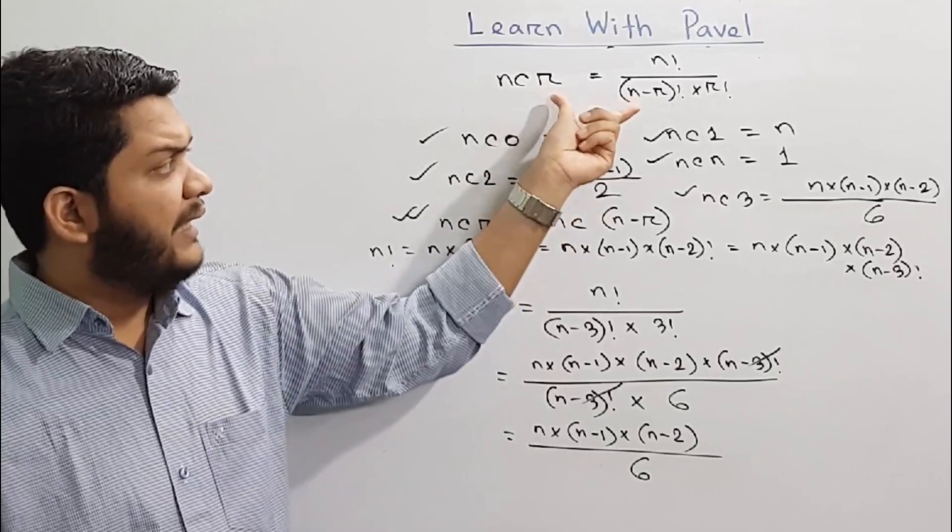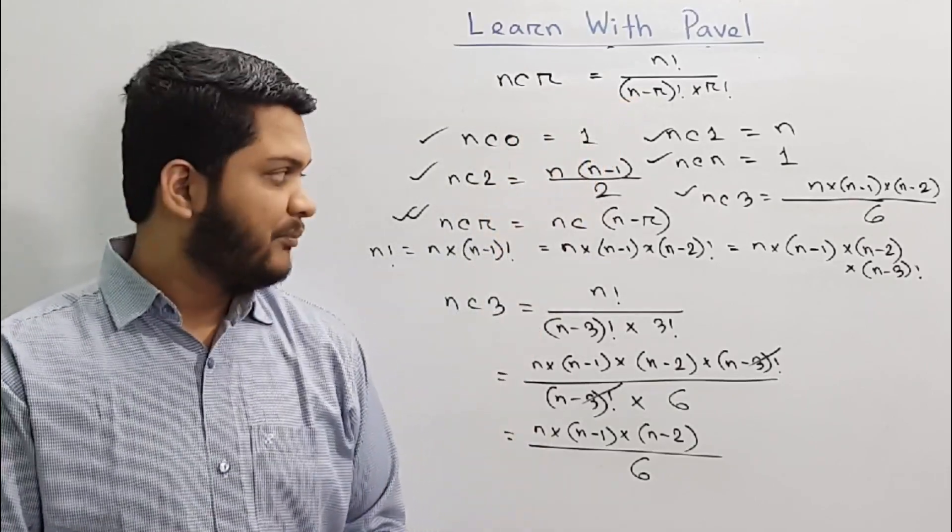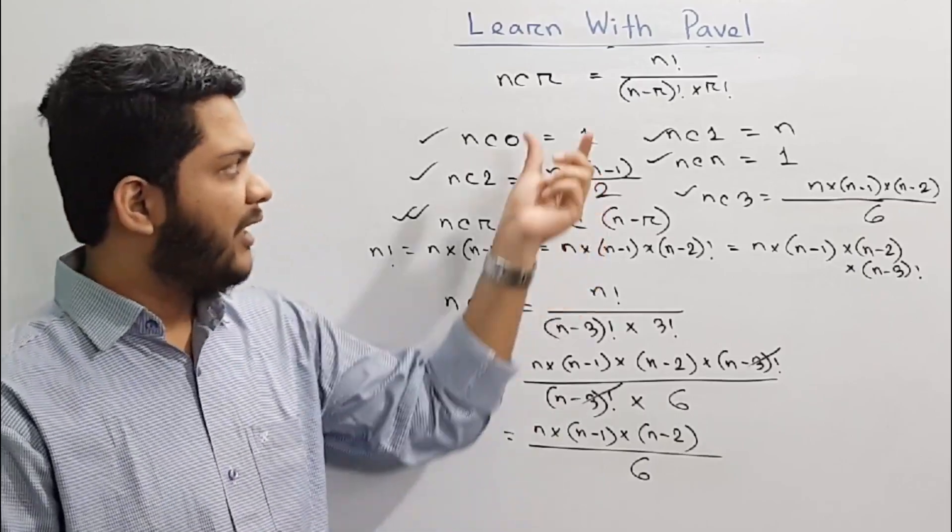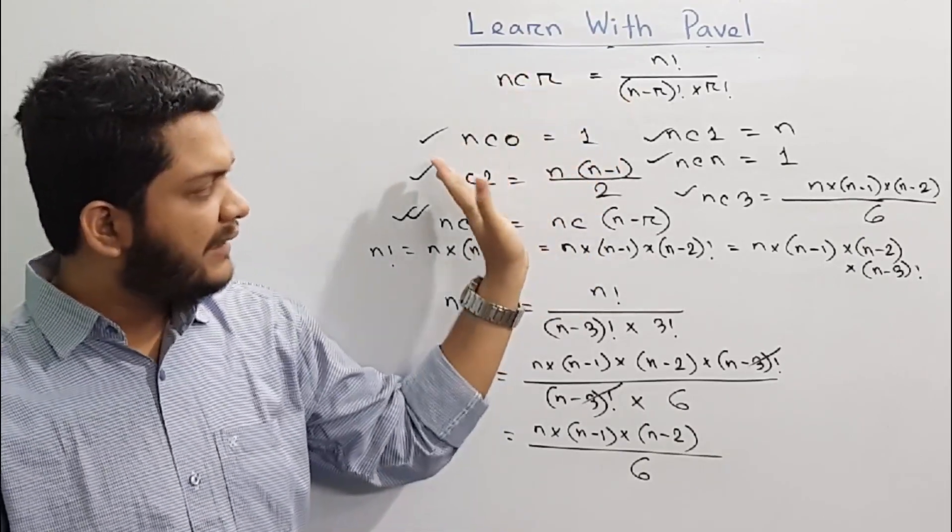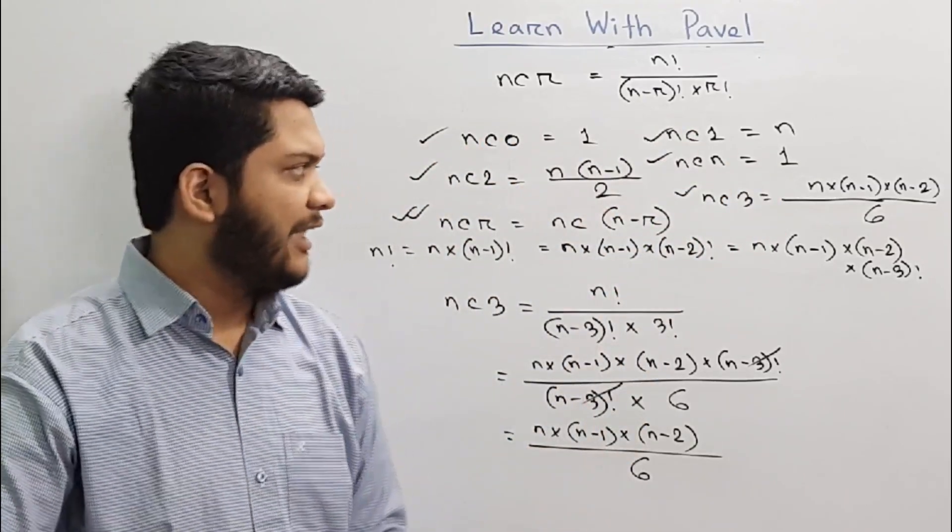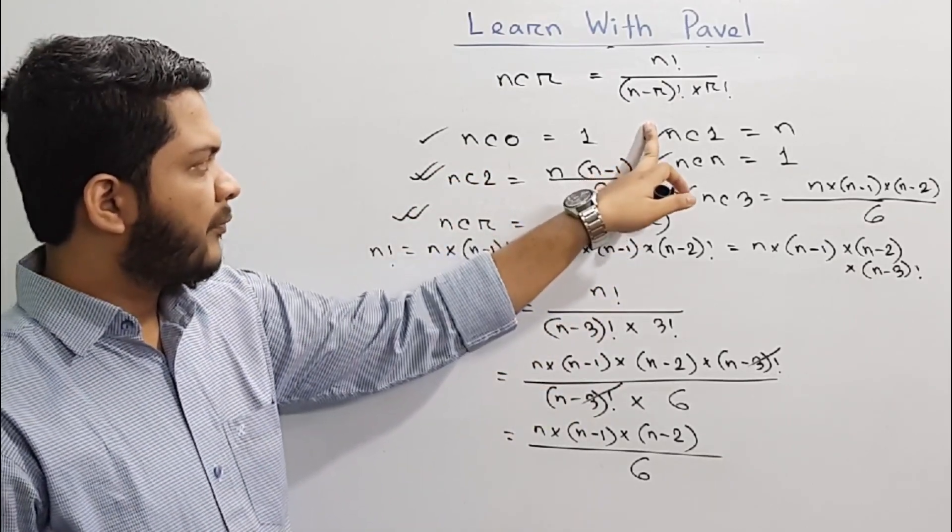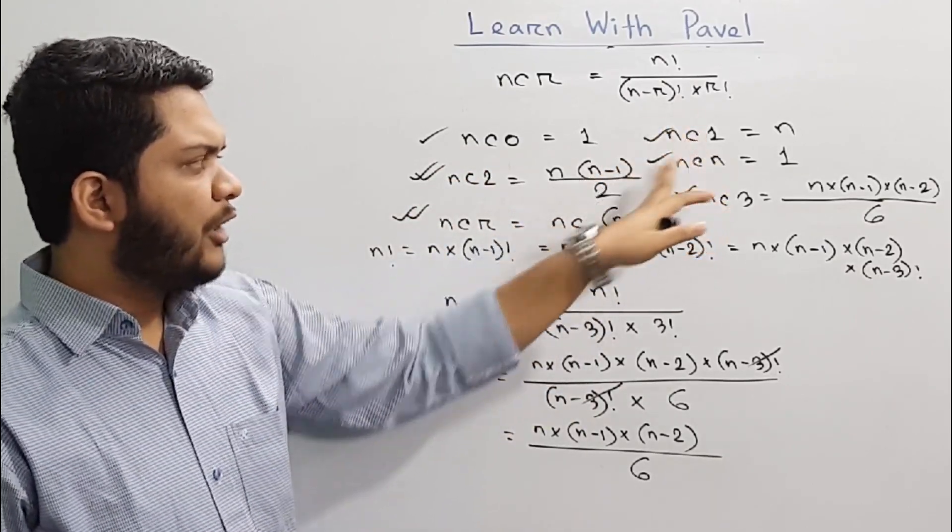So you can see this formula you need to use. We have to use this information. This is nC2, nC1, and nCn. This information is very important.